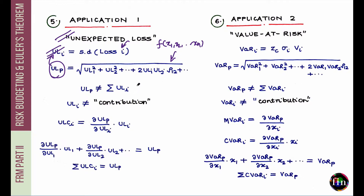Is this function homogeneous? The degree of each term — including cross terms — is 2. If you scale each UL by a constant factor lambda, lambda squared appears in every term; taking the square root throws out a single lambda. So the portfolio UL is homogeneous with degree 1.